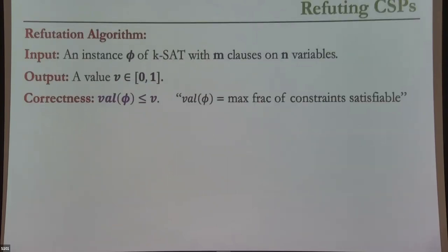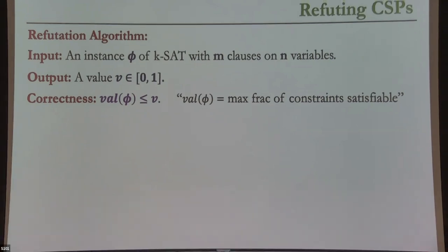You might be aware of the problem of refuting CSPs, but I'll define it so you know the notation I'm going to use. The input to this problem is a KSAT formula phi in N variables and M clauses. The goal of the algorithm is to take this formula and output a number V between 0 and 1.